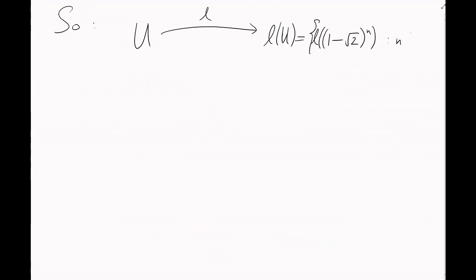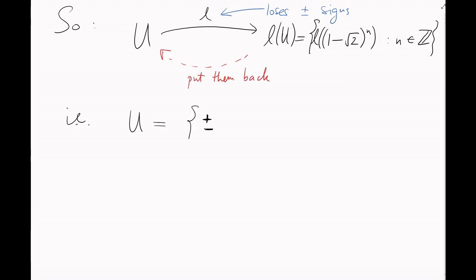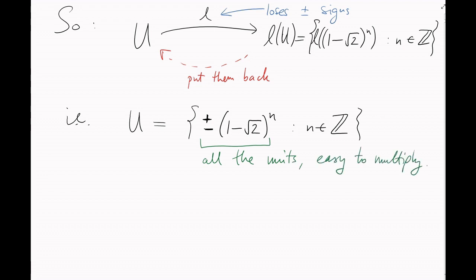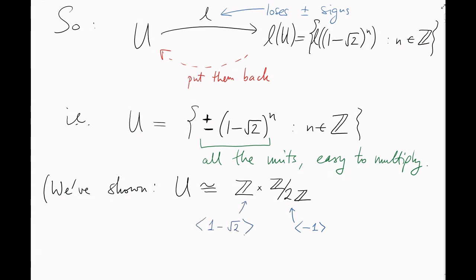So, when we try to describe u, we're going to need to put those minus signs back in. I'll just put a plus or minus sign at the front here. And so now, finally, we have a full description of all the units in z to join root 2. And we know exactly how they multiply. For those of you who know group theory, we've shown that the unit group u has a torsion part of order 2, generated by minus 1, and an infinite cyclic part, generated by 1 minus root 2.